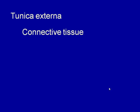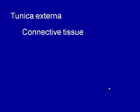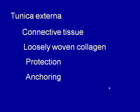The outermost layer of the blood vessel is the tunica externa. This is connective tissue with a lot of loosely woven collagen. This helps protect the blood vessel and also anchors it in place.